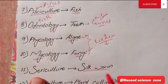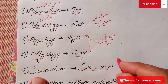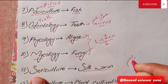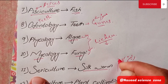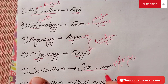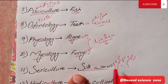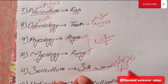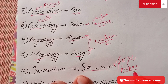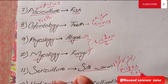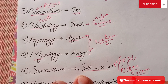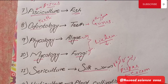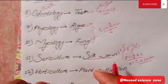The next branch is Sericulture, which is the study of silk worms. Resham means silk. The developmental stages of silk worms are studied, including pupal stages. The silk produced goes through various developmental stages, and different types of silk fabric are made from this process.